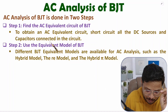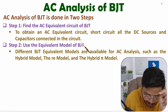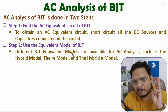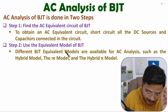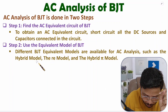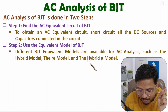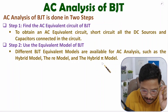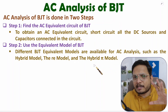In the second step, we need to replace the given BJT with an equivalent model. There are three major equivalent models available: the hybrid model, the RE model, and the hybrid Pi model. I will explain each of these models in separate videos.